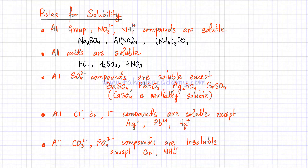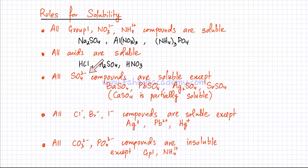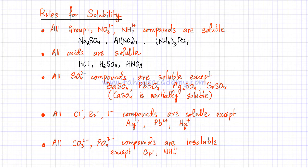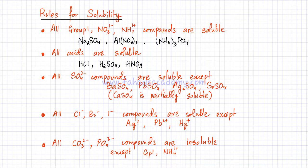The third rule for solubility applies to sulfates. All sulfate compounds — any compound containing SO₄²⁻ ions — are soluble, except for four compounds. Barium sulfate is insoluble, lead sulfate is insoluble, silver sulfate and strontium sulfate are also insoluble. Calcium sulfate is partially soluble, meaning it is somewhat but not completely soluble.